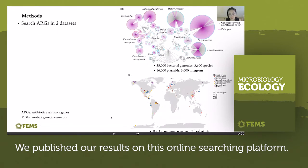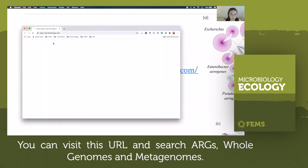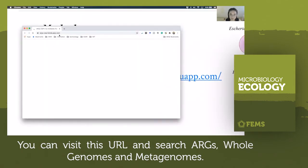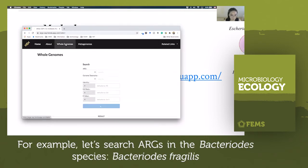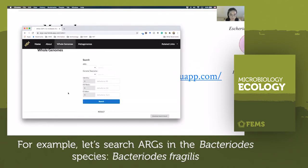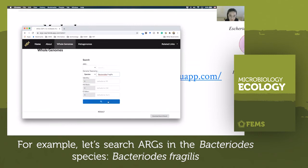We published our results on this online searching platform. You can visit this URL and search our genomes and metagenomes. For example, let's search ARGs in Bacteroidetes species — Bacteroides fragilis.